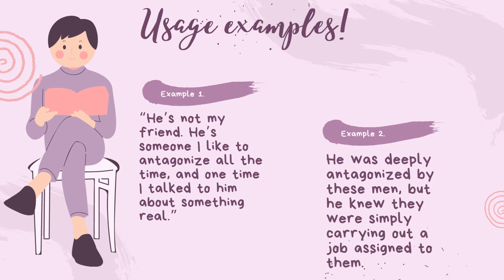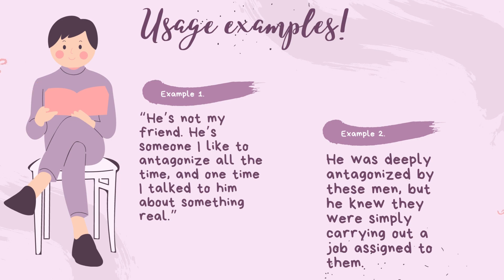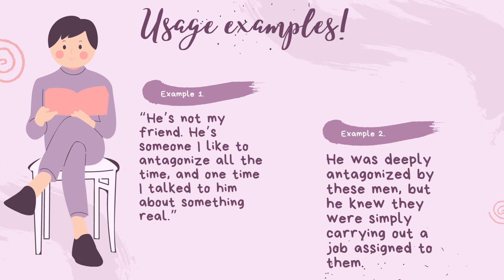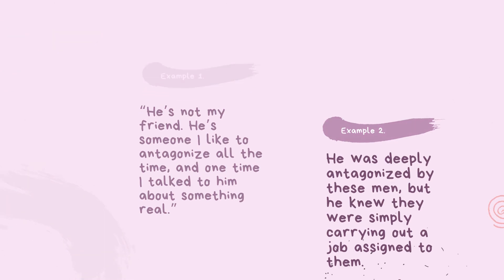Usage examples. Example 1: He's not my friend. He's someone I like to antagonize all the time, and one time I talked to him about something real. Example 2: He was deeply antagonized by these men, but he knew they were simply carrying out a job assigned to them.